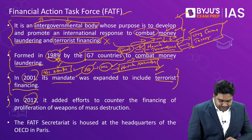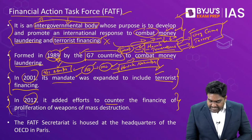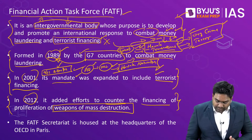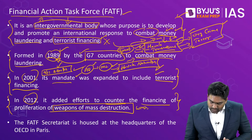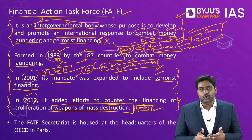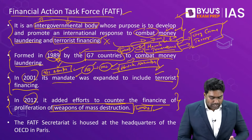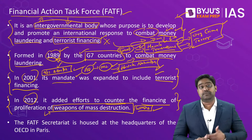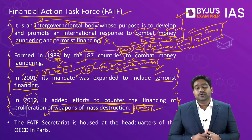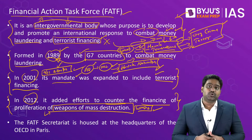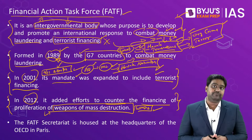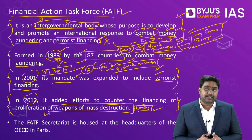Then later in 2012, FATF's mandate was further expanded to counter the financing of proliferation of WMDs, or weapons of mass destruction. If any money is being used through laundering channels to proliferate WMDs — such as chemical weapons, biological weapons, or nuclear weapons — the financing of such weapons programs will also be tackled and curbed by FATF. These are the primary objectives of this organization.